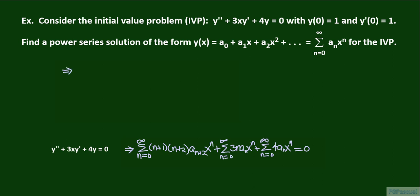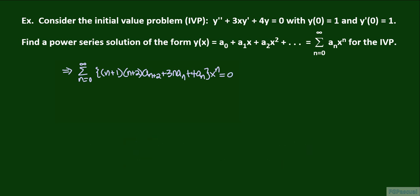We combine all of these into a single summation: the sum from n equals 0 to infinity of the quantity — the quantity n plus 1 times the quantity n plus 2 times a sub n plus 2, plus 3n a sub n, plus 4 a sub n — times x to the nth power, equals 0. Since we are working with similar terms, the coefficient must equal 0: the quantity n plus 1 times the quantity n plus 2 times a sub n plus 2, plus 3n a sub n, plus 4 a sub n equals 0.